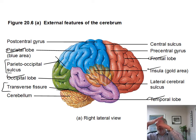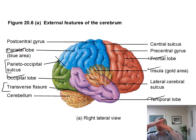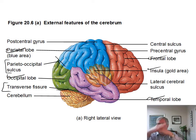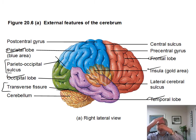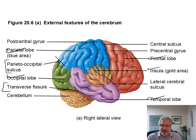The cerebellum is sitting here — this cauliflower-like structure back here — and the occipital lobe is back behind it, but there's a big gap. They're sitting next to each other, but you can pull them apart very easily and see a gap between the two of them. So they aren't connected. The cerebrum and the cerebellum are actually separated — that's called the transverse fissure in back.